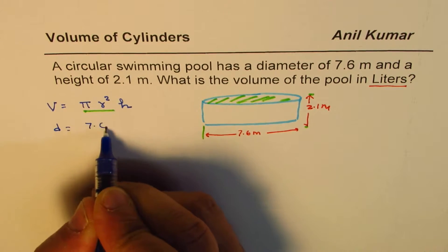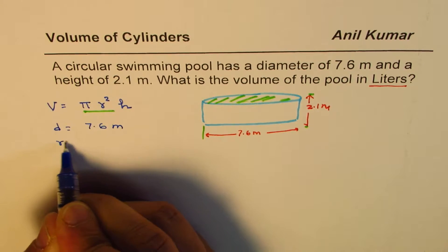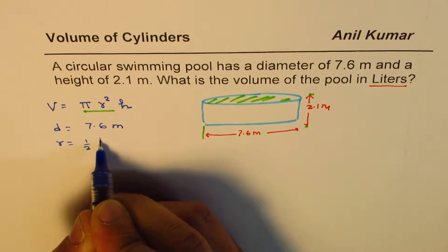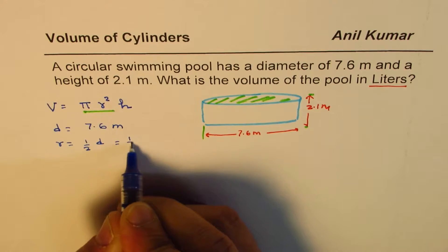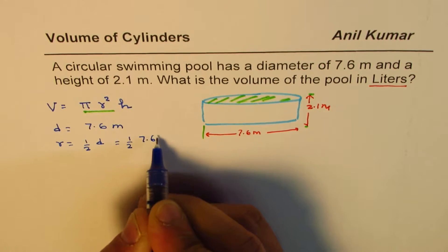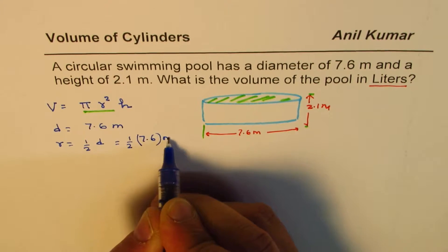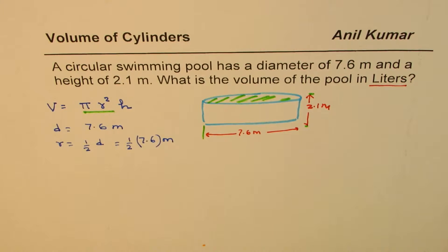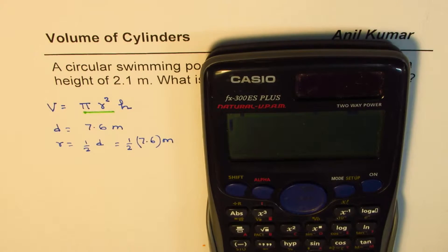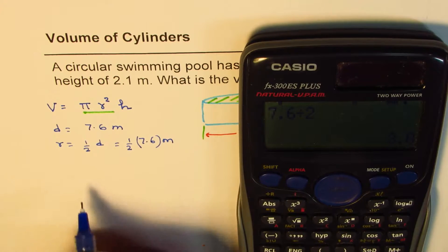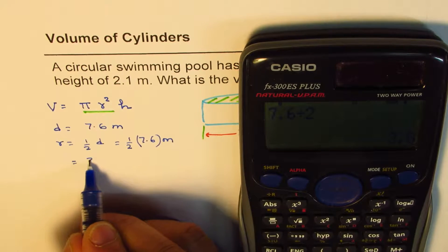Now we are given the diameter, so the diameter is given to us as 7.6 meters. We can find radius as half of diameter, so it is half of 7.6 meters. Let's use the calculator: 7.6 divided by 2 equals 3.8 meters.